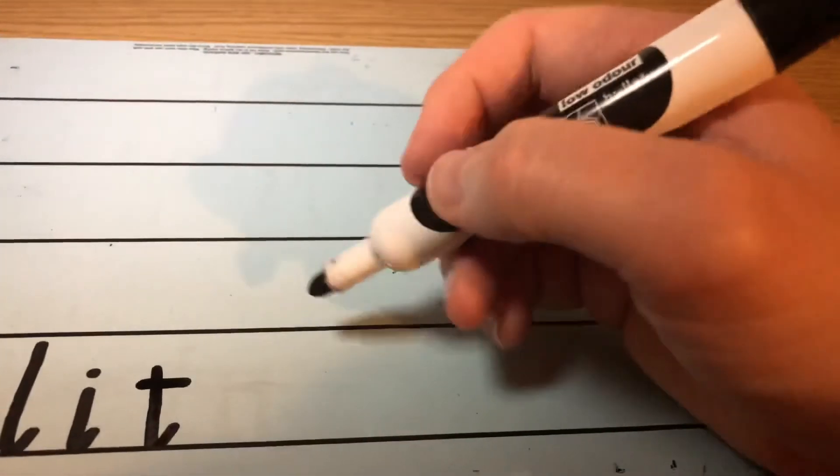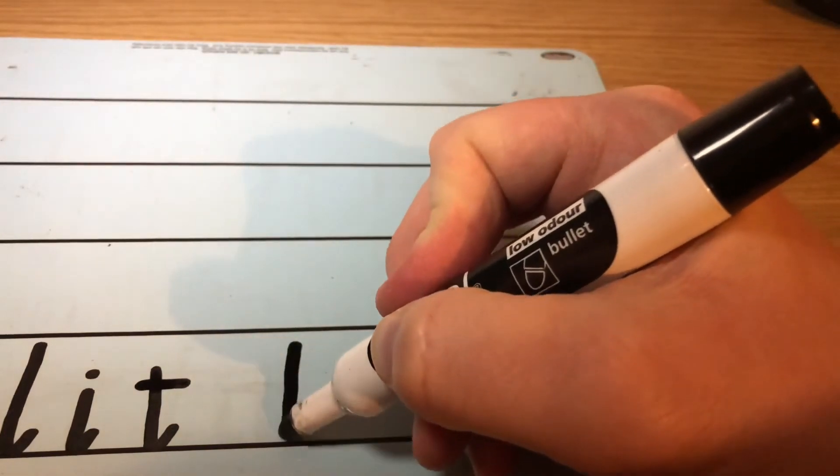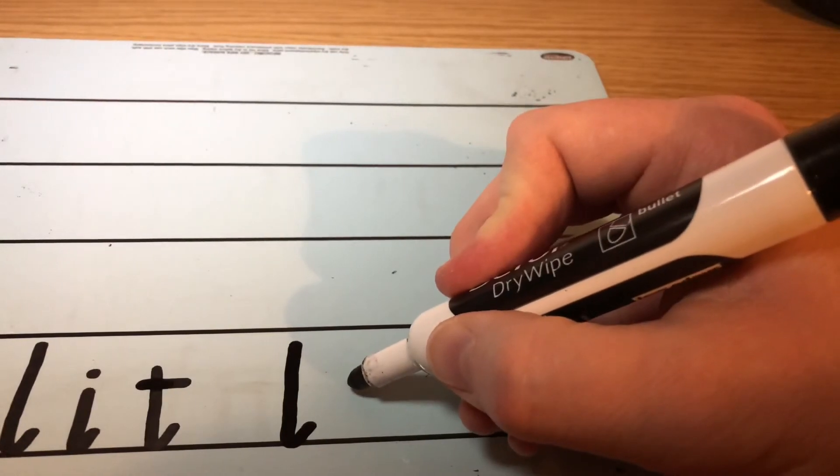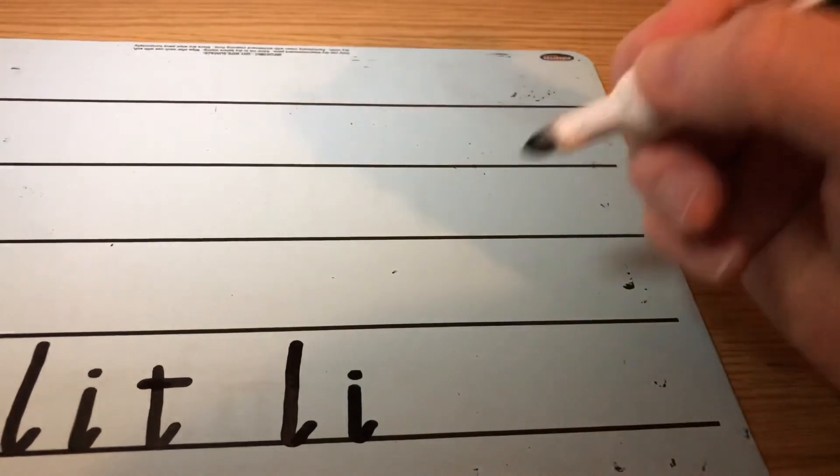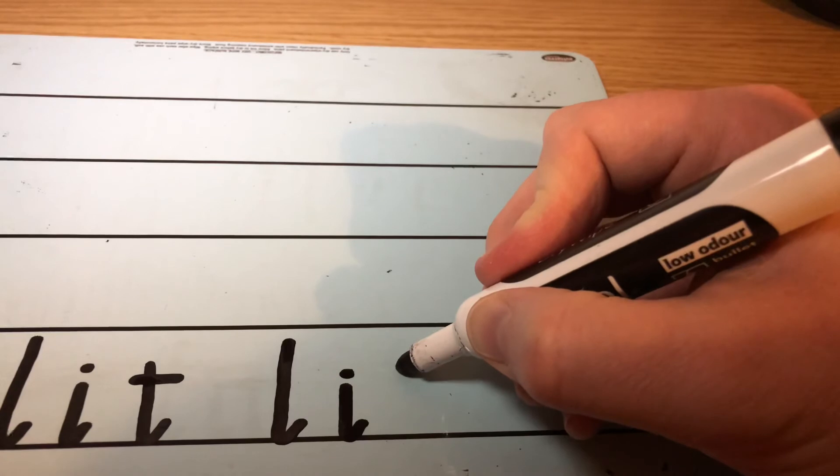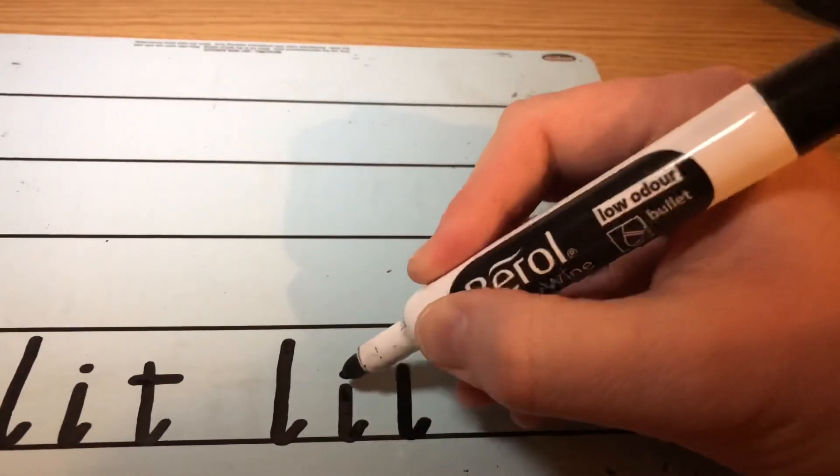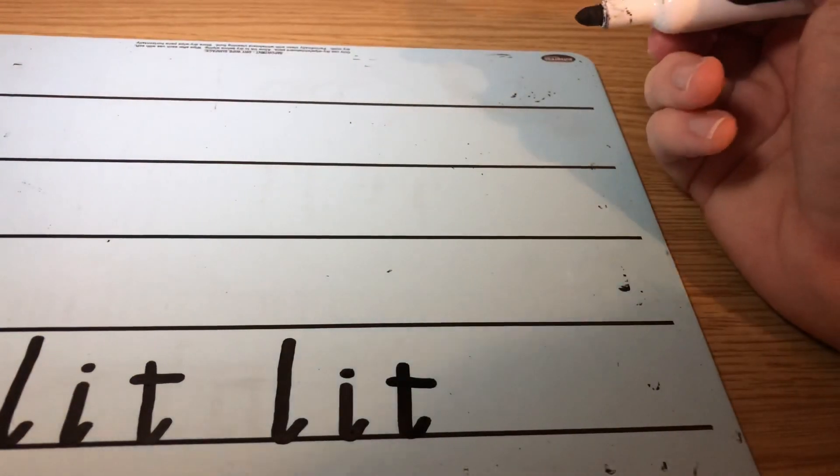One more time. Let's keep that there. So we go l, start at the top, come all the way down, flick, i. Normal size letter. Start at the top, come all the way down, flick, do the dot, the t. Start a bit higher, remember. Start at the top, come all the way down, flick, and then do the cross part at the same height as the i. Okay.